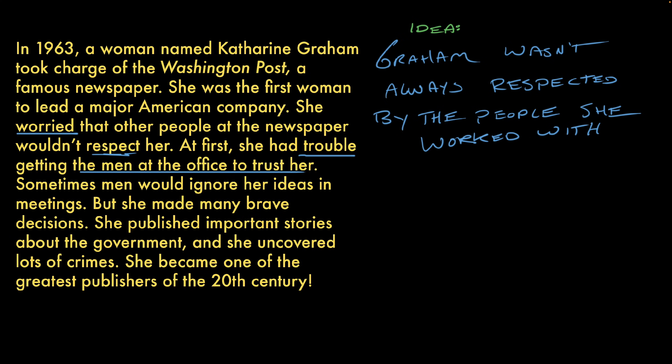There's one more detail that seems related to my idea. Sometimes men would ignore her ideas in meetings. Jackpot. That's also related to the idea I'm trying to support. Step three, now I need to explain how these two pieces of evidence support my idea. First piece of evidence: she had trouble getting the men at the office to trust her. And there's no respect without trust — that shows she wasn't always respected. Second piece of evidence: sometimes men would ignore her ideas in meetings. It's pretty disrespectful to ignore someone in a meeting or otherwise. Think about how you feel when someone ignores you.